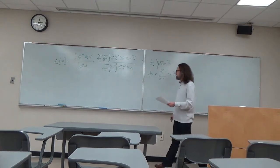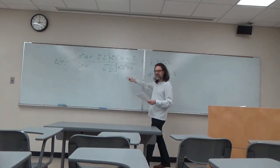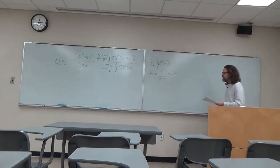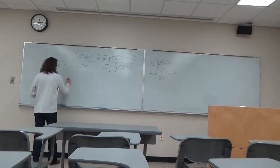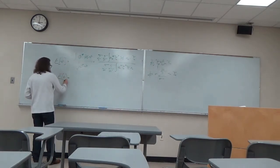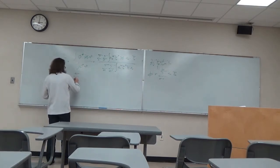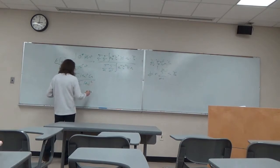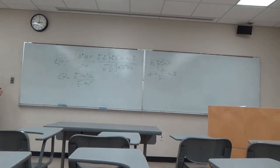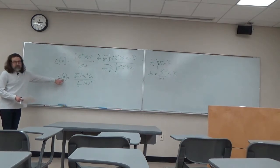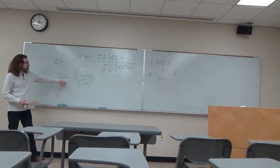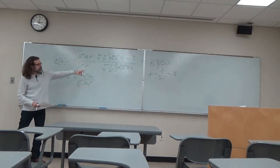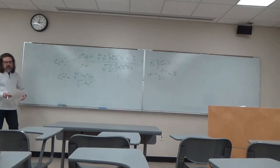Now, because we know that these psi are orthonormal, that means that our expectation value becomes sum n a n squared. So the expectation value of the guess function, our arbitrary phi, is written out as a sum of the coefficients in front of our expansion and the true eigenvalues.